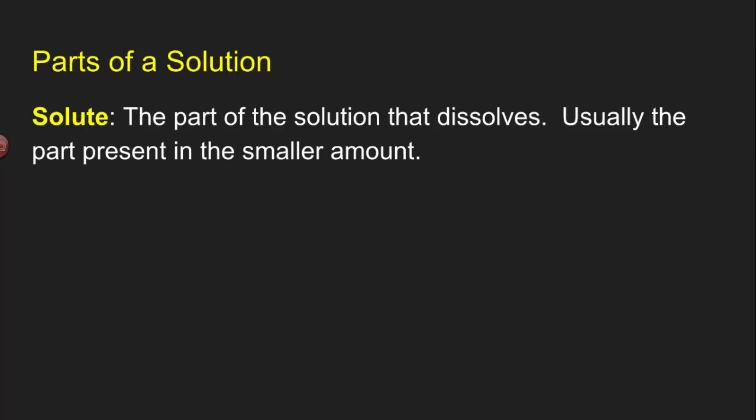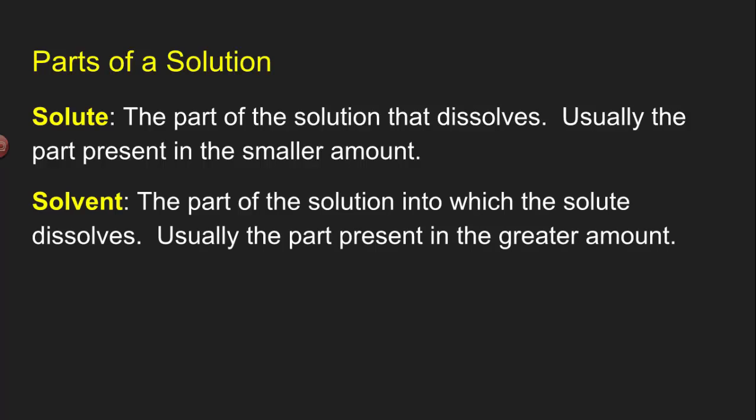First we need to understand the parts of a solution. We know what a solution is already, homogeneous mixture, one phase. The parts of a solution are the solute. The solute is the part of the solution that dissolves. Usually it's present in the smaller amount, so there's usually less solute than solvent. The solvent is the part of the solution into which the solute dissolves. Usually that's the part of the solution that's present in a greater amount. So a solution is made of a solute and a solvent.